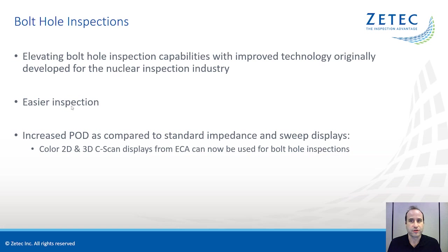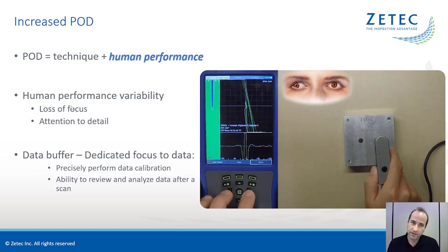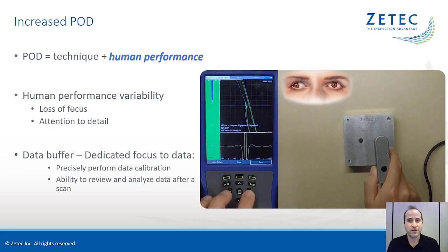Now let's focus on bolt hole inspections. C-scans have been a proven tool for nuclear inspections for decades now, and we've taken the same technology and we apply it now to bolt hole inspections. The C-scan makes it easier for the inspector by making it easier to identify signals of interest, and this intrinsically increases the probability of detection. I've said that the formula for POD is the technique itself plus human performance. Factors that contribute to reduced human performance are loss of focus and attention to detail. Let's talk a little bit more about that.